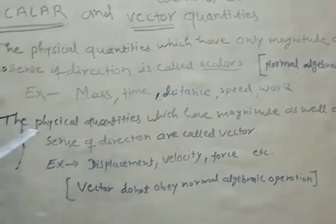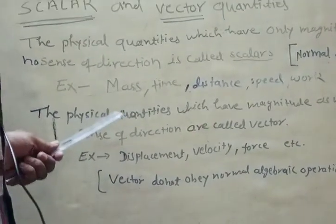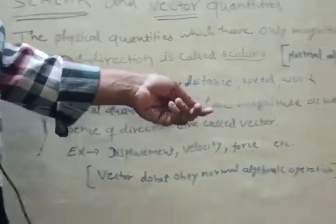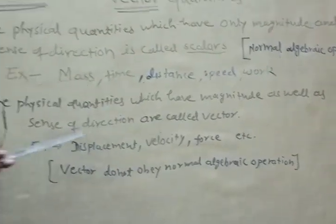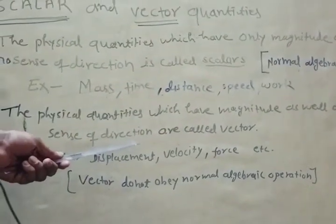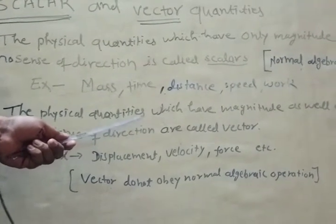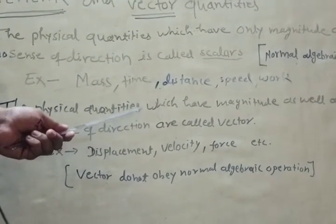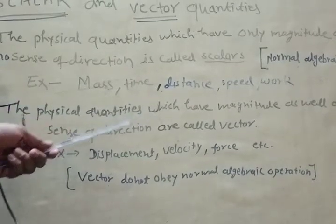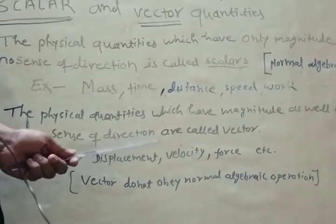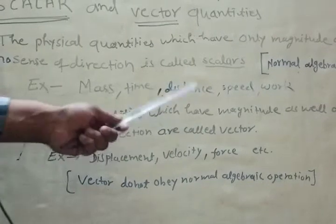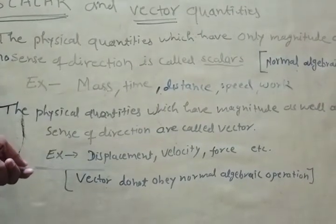Second quantity: the physical quantity which have magnitude as well as sense of direction are called vector quantity. Magnitude as well as sense of direction, vector quantity.